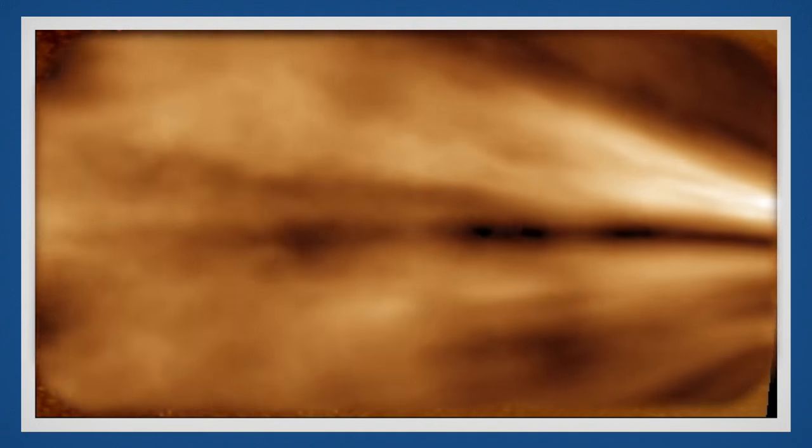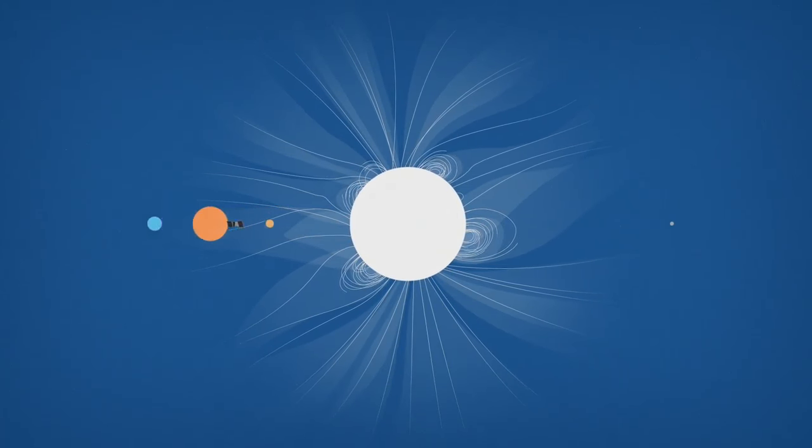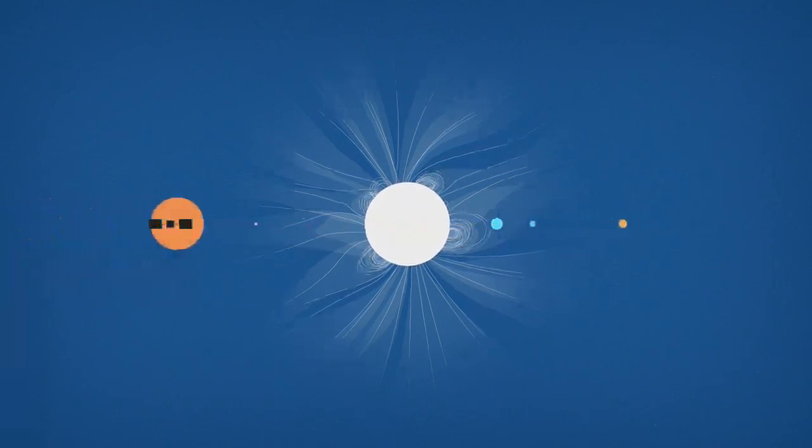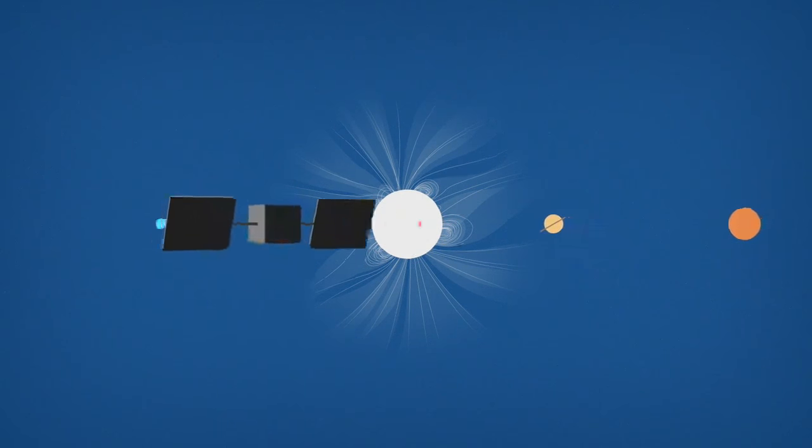These are the first movies of the solar wind itself in a previously unmapped region, helping us understand what's flowing from the Sun through the space around our planet and out to the edges of our solar system. Crucial information as we continue to explore.